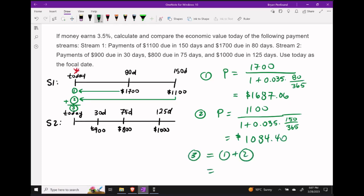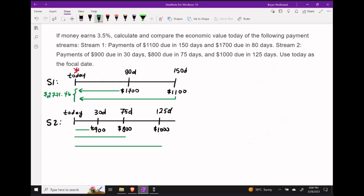The last step to calculate the fair market value today of the first payment stream is to add up one and two. Taking our $1,084.40 and our $1,687.06, adding them together gives us a fair market value of $2,771.46. I've marked that on the left underneath S1.